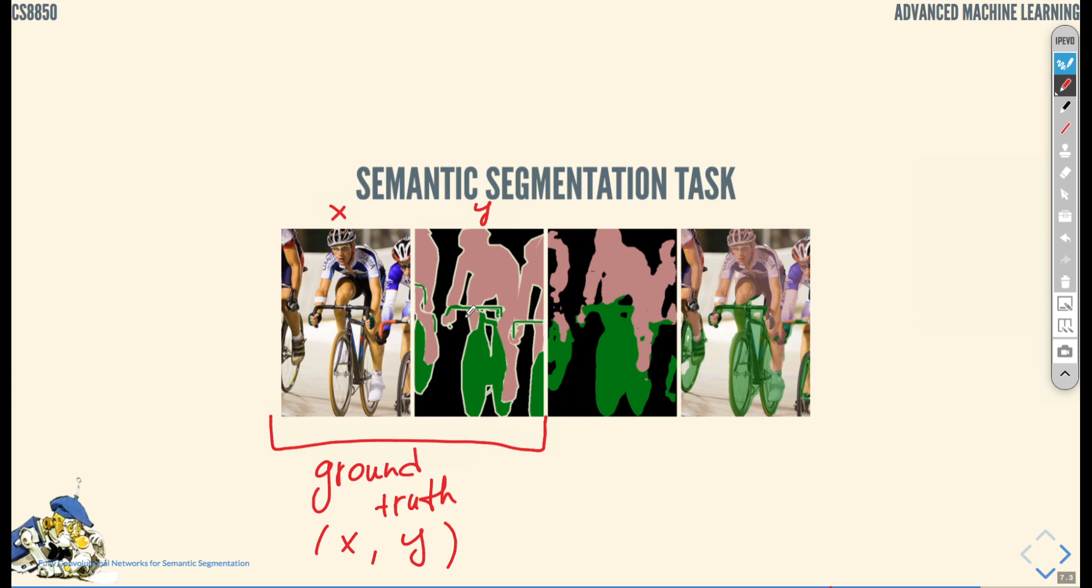We want to automatically, from that image x, construct a mask like that or be able to segment live on the image, as you see right here. That is the semantic segmentation task.